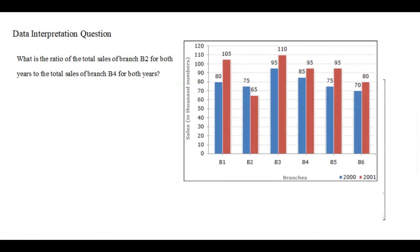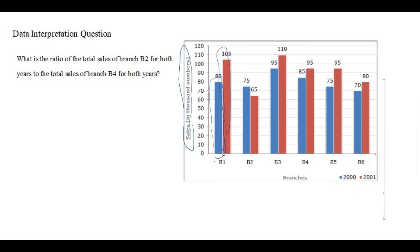Here we have the question — let me just narrate it for you. Here is the sale of five to six branches across two different years. The blue color shows the sale in 2000 and the red shows the sales in 2001. For branch one, the sale in 2000 is almost 80, meaning 80,000. In 2001, the sale is 105,000.